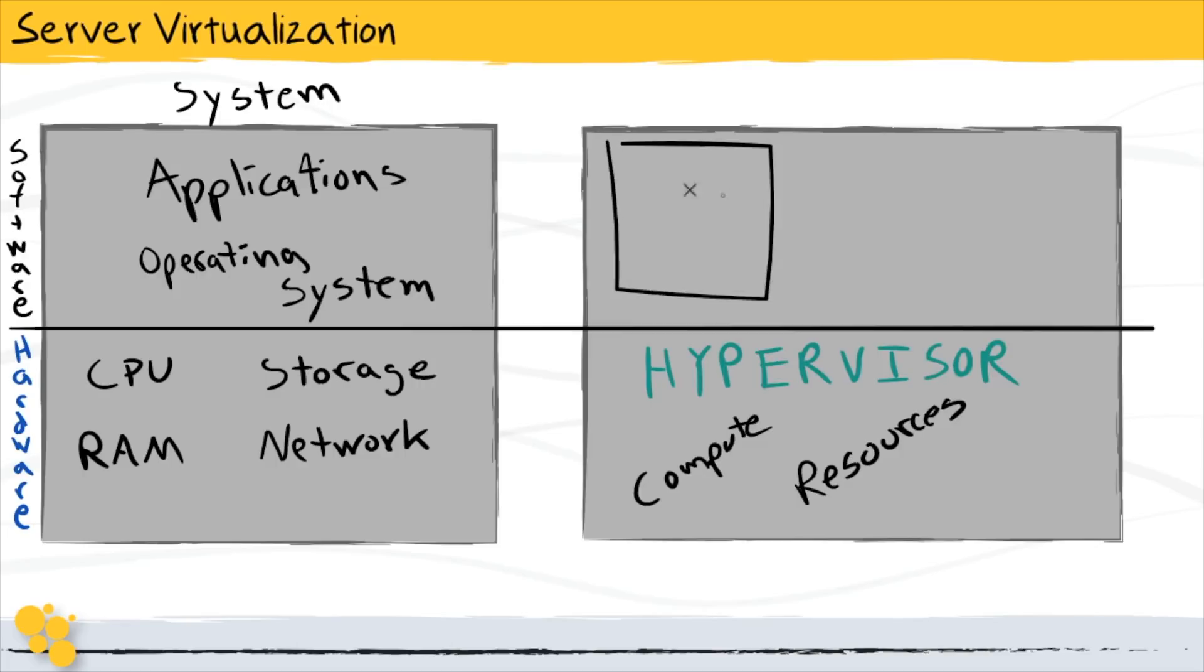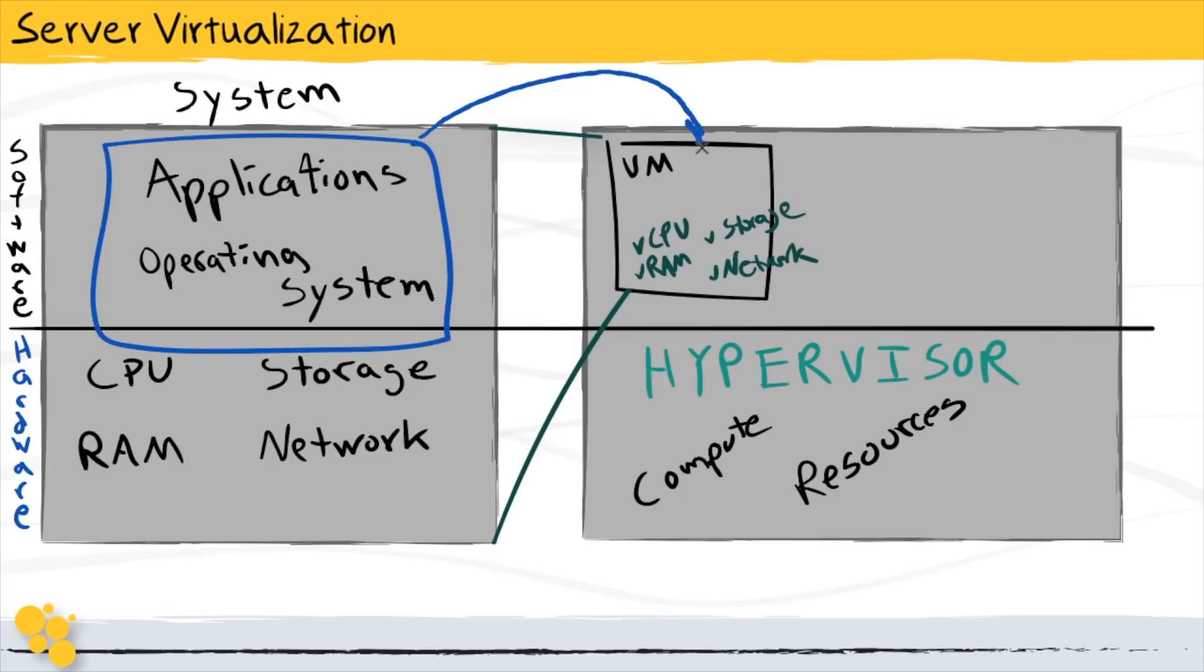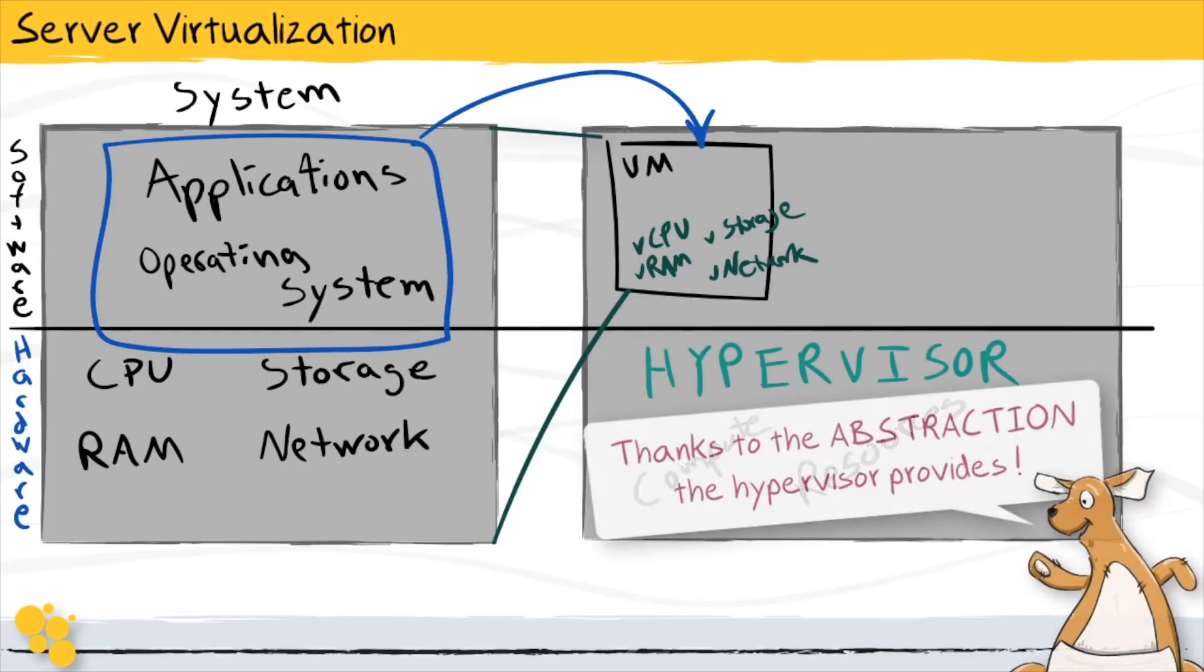Once we have our hypervisor installed on our hardware, we can create what are called virtual machines. And a virtual machine basically looks and functions just like a regular system would. As far as the software is concerned, there is a virtual CPU that they see, there's virtualized RAM, there's virtual storage that they're going to have access to, and there are virtual network interfaces. And so as this went on, we were able to take applications and run them on top of these virtual machines without them having any idea that they weren't working directly with hardware.